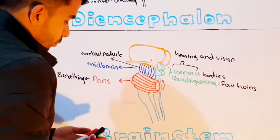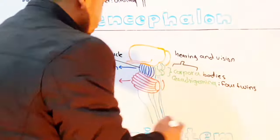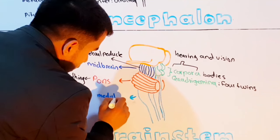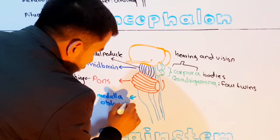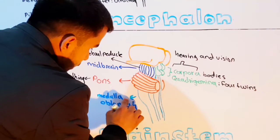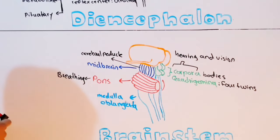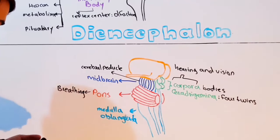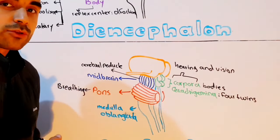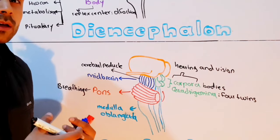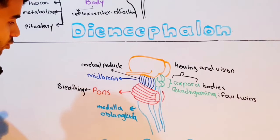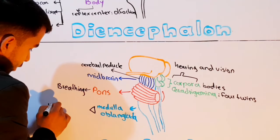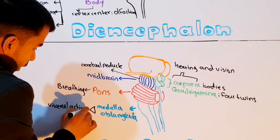Inferior to the pons is the medulla oblongata. The medulla oblongata is very important and is involved in vital visceral activities — vital internal activities — such as heart rate, blood pressure, breathing, swallowing, and vomiting. These are all controlled by your medulla oblongata.